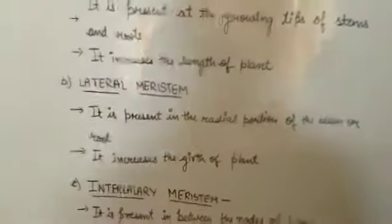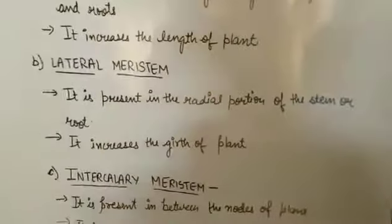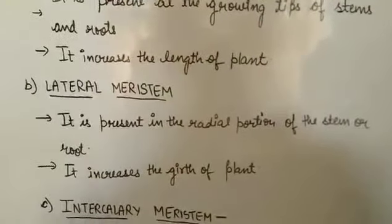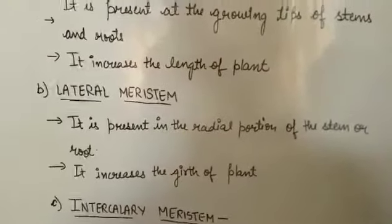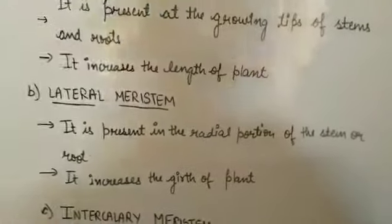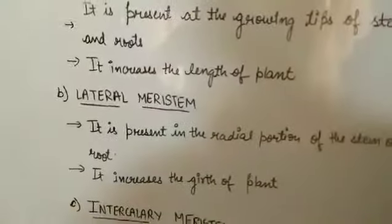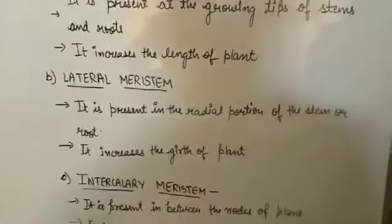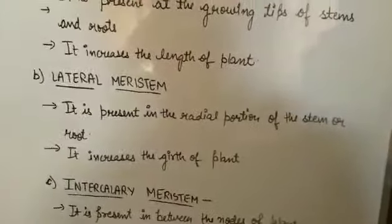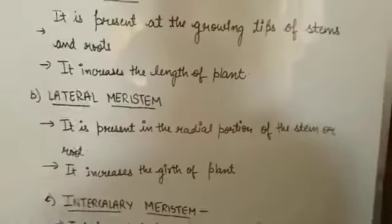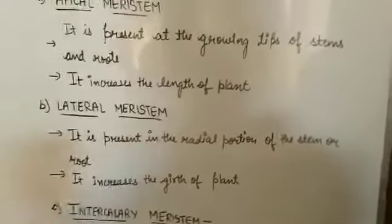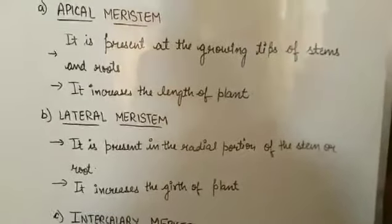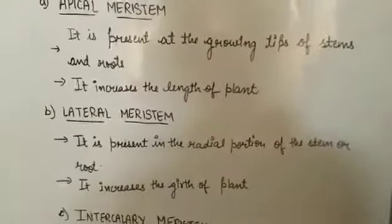Lateral meristematic tissue is present in the radial portion of the stem and root, and it increases the girth of the plant — that is, the width of the plant increases. This increase in width of the plant is due to the lateral meristematic tissue, which is present in the radial portion of both stem and root because it helps in widening them.